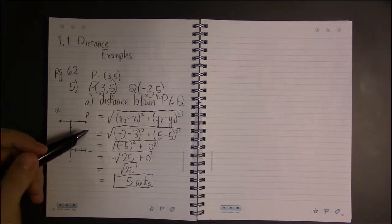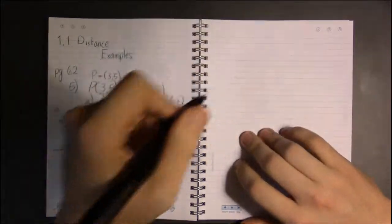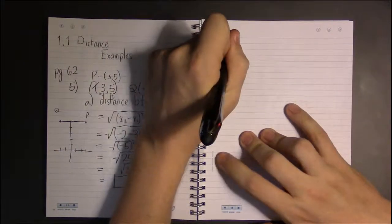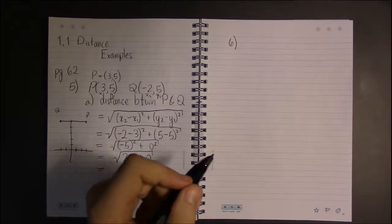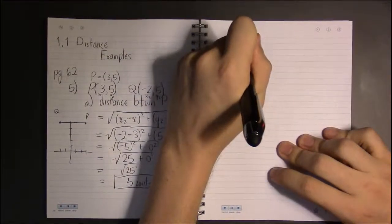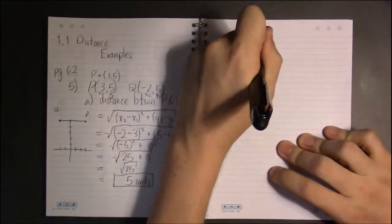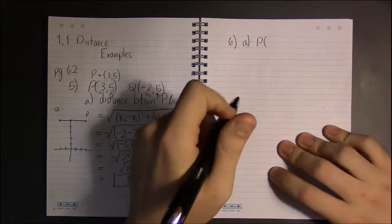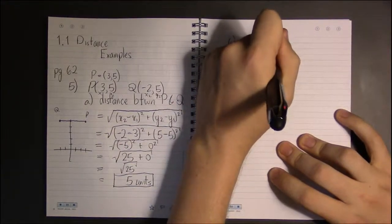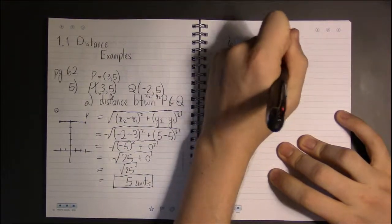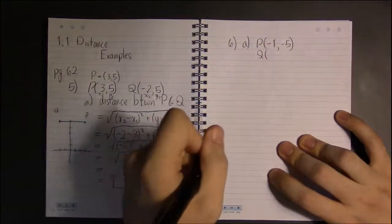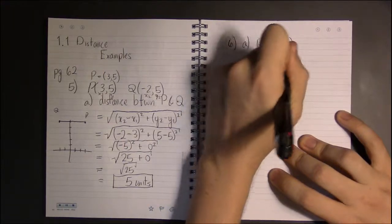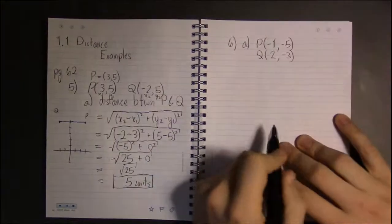If we take a look at problem six in this section, our point is the point P(-1, -5), and our Q is the point (2, -3).